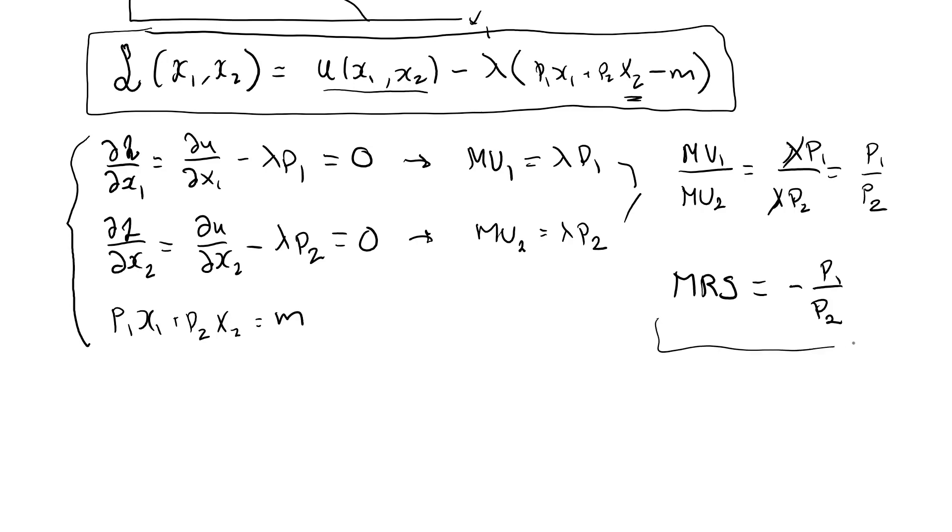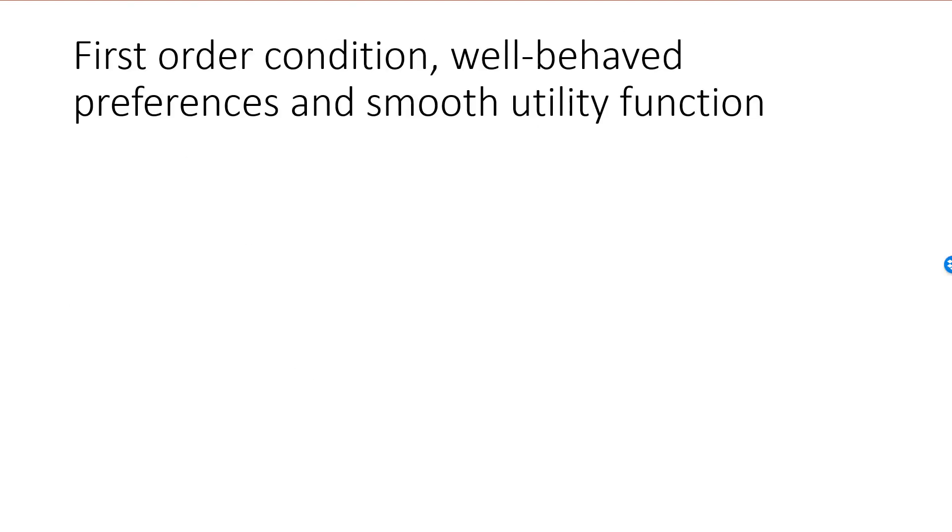Using this equation and this equation, we will then be able to find the optimal solution, something we will talk more about in the following slides. Here is a summary, if we can represent well-behaved preferences with the smooth utility function u, then optimal choice can be described mathematically as the solution to a constrained optimization problem.